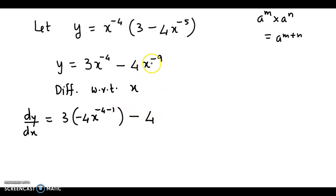The derivative of -4x^(-9) is -4 times -9x^(-10). Multiplying the first term: 3 times -4 gives -12x^(-5).